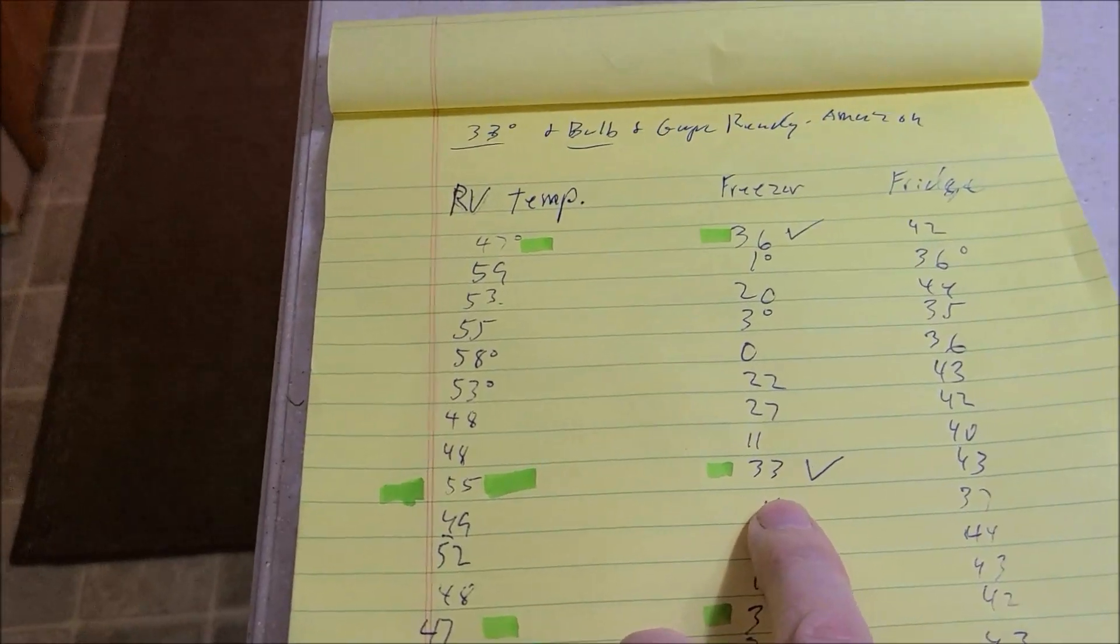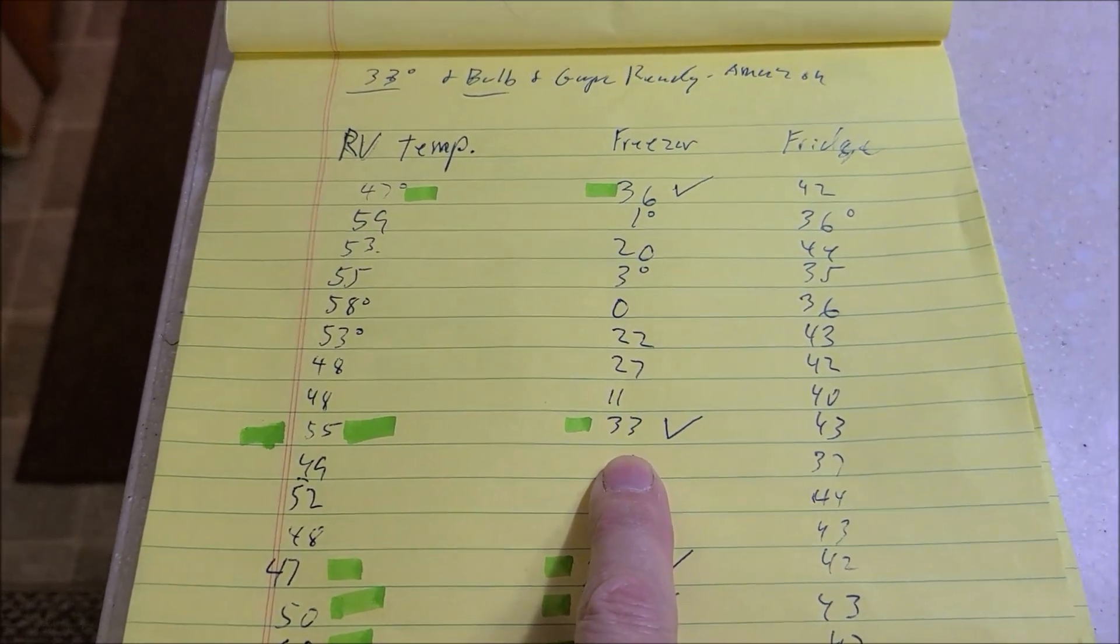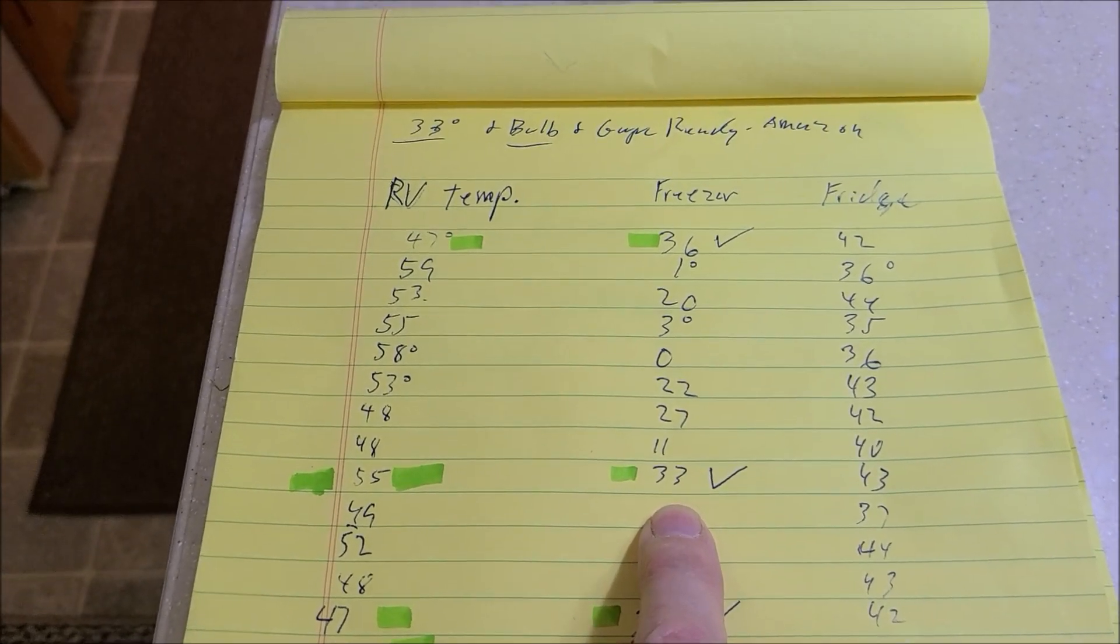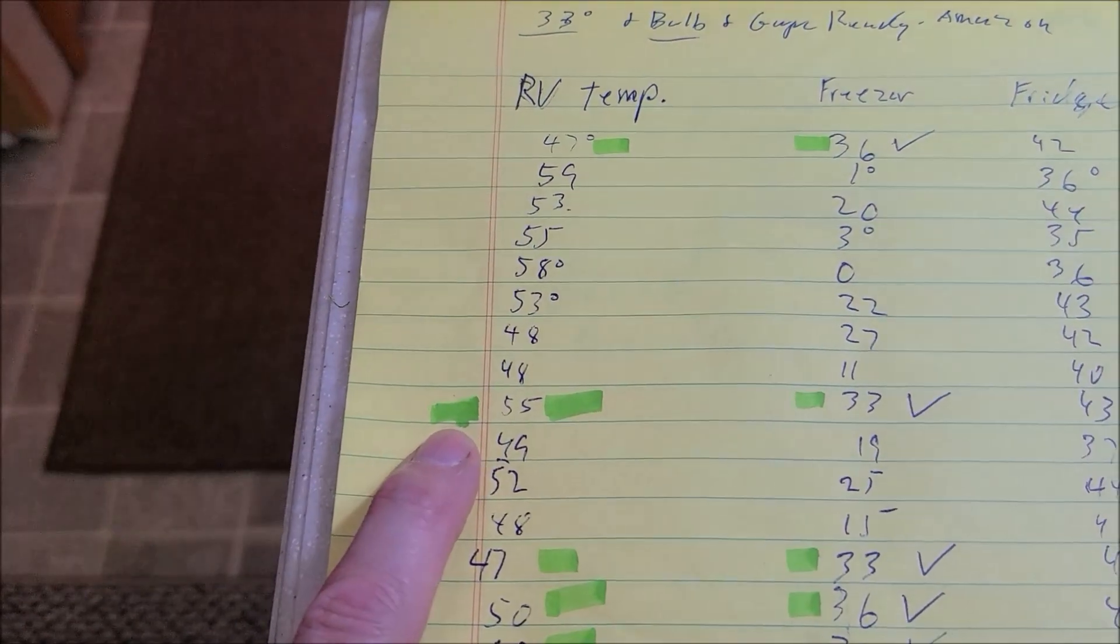And I noticed, I noted anytime we went above, whenever the freezer went above freezing, because when that happens any food you got in there is going to thaw out and ruin and probably be a danger to your health. But the tipping point is about 55 degrees.